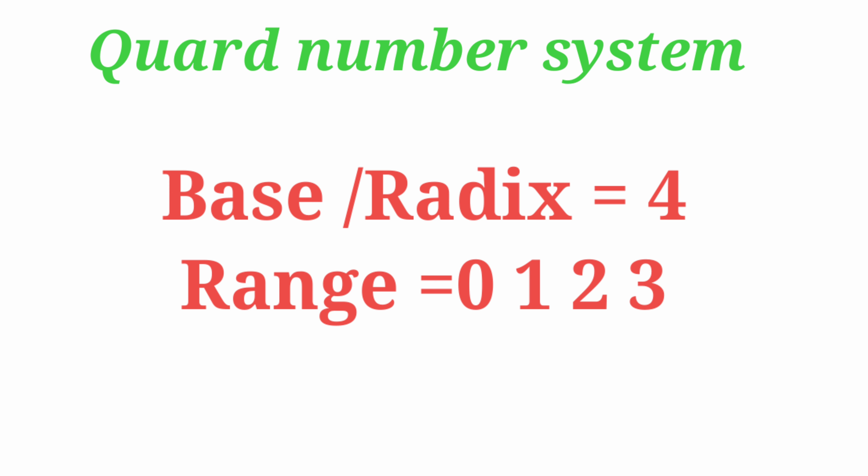The quad number system is one of the number systems. The base value, or radix value, is 4, and the range of digits is 0, 1, 2, and 3.